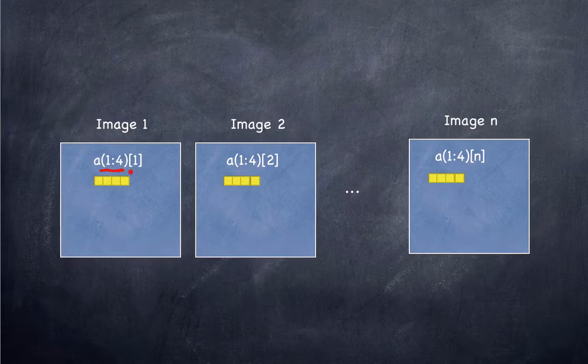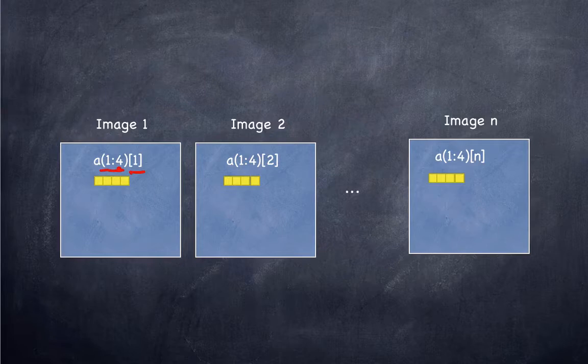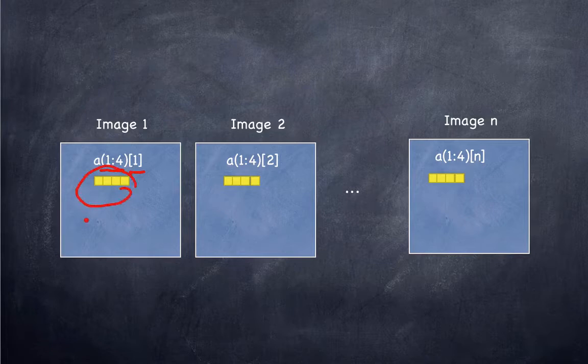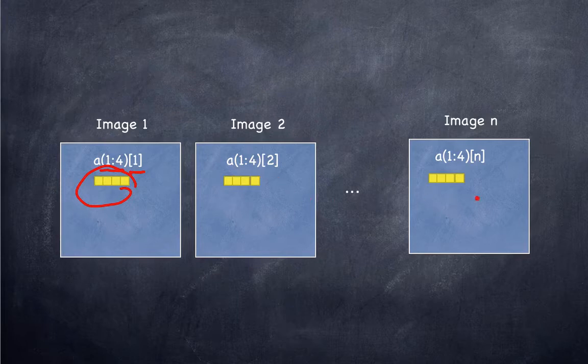Now with coarrays you can also have one or more co-dimensions that are listed in square braces. And when a program ranges over the regular dimensions the image is operating on its own local data, and when the co-dimension varies the image is potentially doing communication to operate on global data across the program.